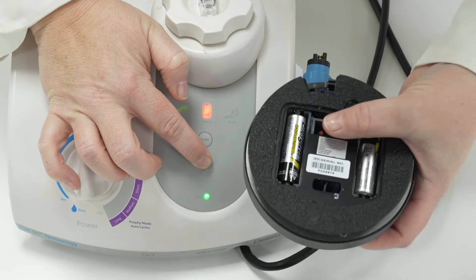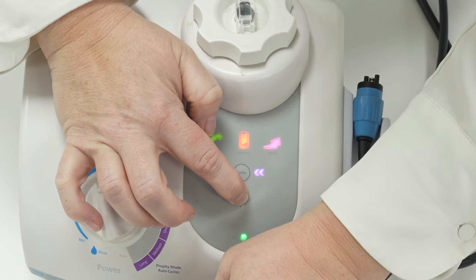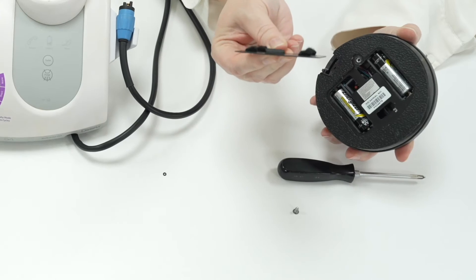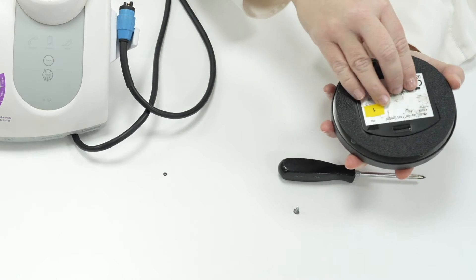Then press the small red button on the base foot pedal which is found in between the batteries until all the icons on the Cavitron panel are flashing at the same time in unison. Once that has happened the foot plate can be replaced.